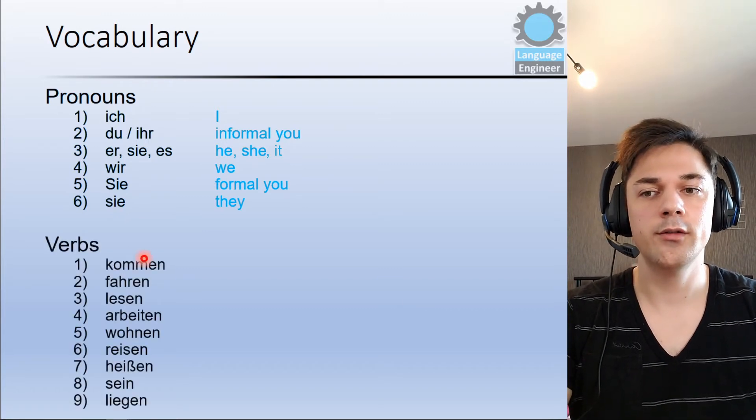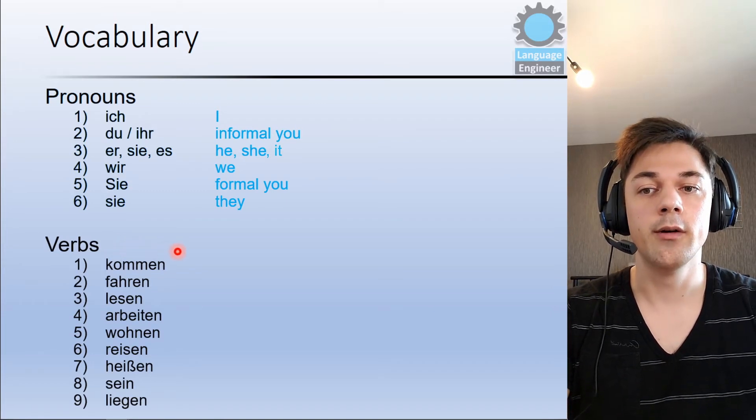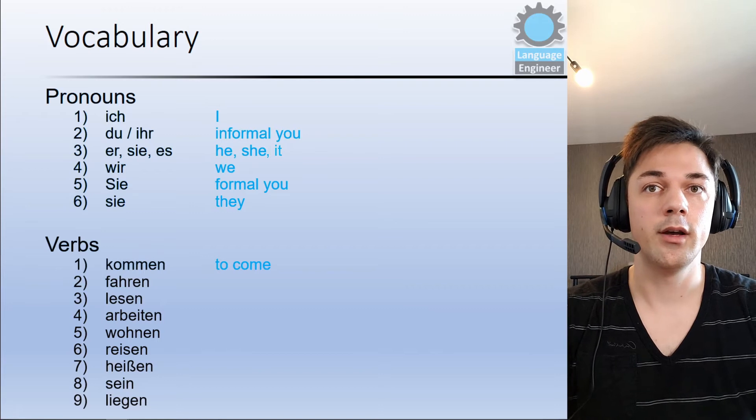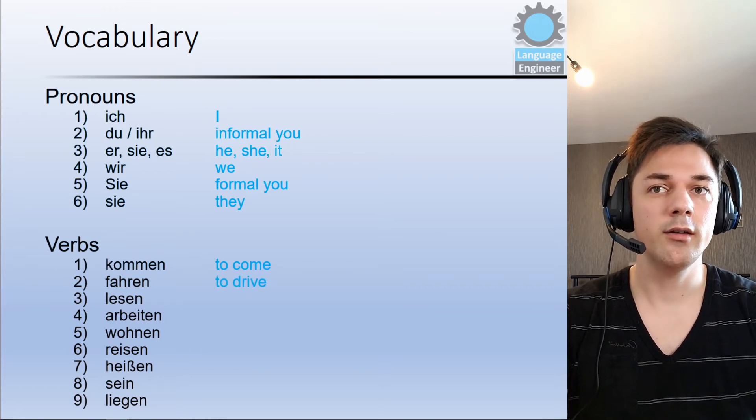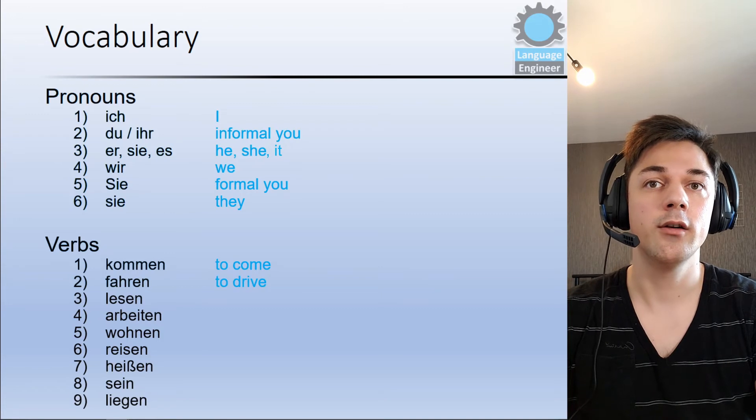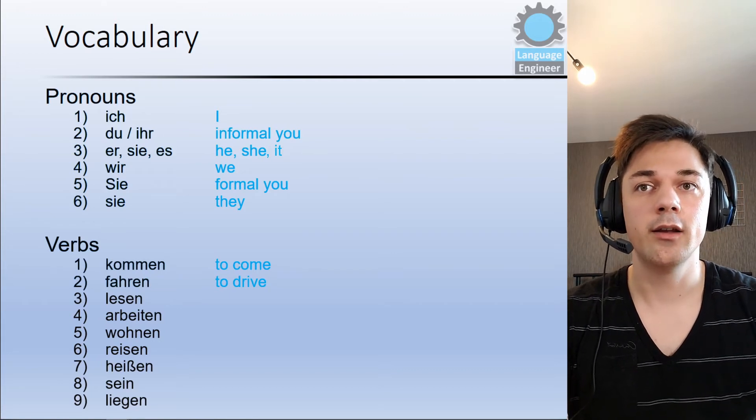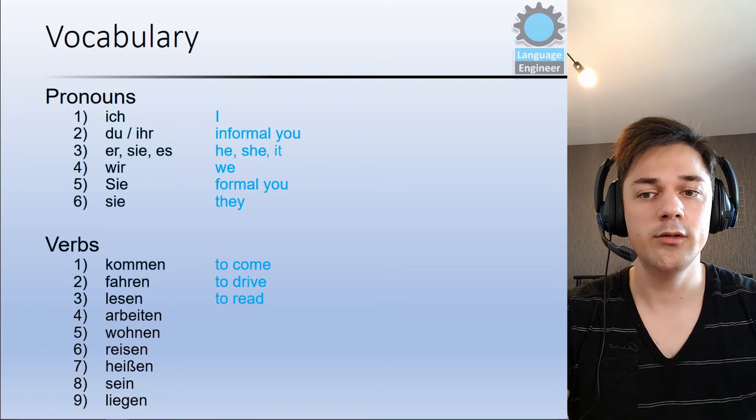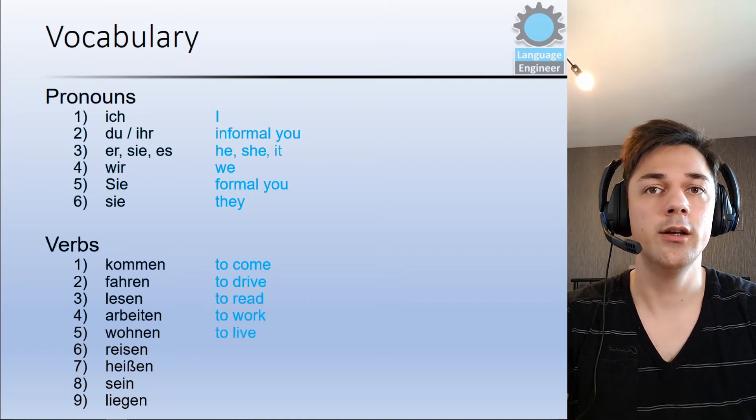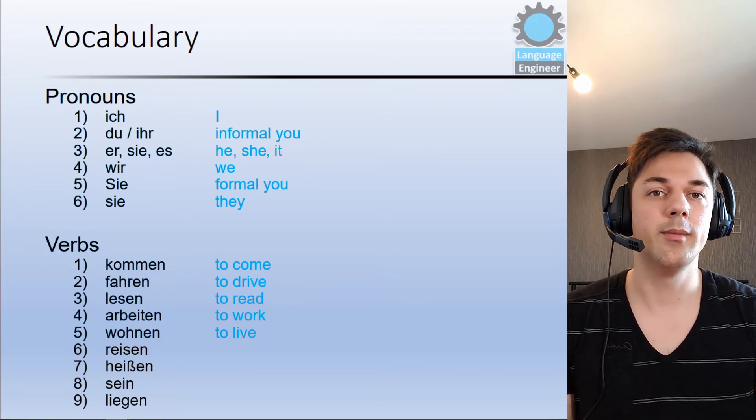And the next thing I want to discuss are verbs which we use in lesson 3. So the first verb is kommen and this means to come. Then we use fahren and this means to drive. And one information for you, if you also want to practice your pronunciation you can stop the video after I read one new vocabulary and you can try to repeat the words. Then we have lesen. Lesen means to read. And arbeiten means to work. Wohnen means to live, if I live in a place, for example I live in Germany, I live in America or something like that.